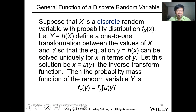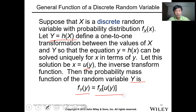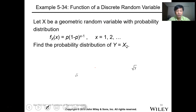General function of a discrete random variable: suppose that x is a discrete random variable with probability distribution f(x). Let y equals h(x) define a one-to-one transformation between the values of x and y, such that the equation y equals h(x) can be solved uniquely for x in terms of y. Let this solution be x equals u(y) — the inverse transform function. Then the probability mass function of the random variable y is f_Y(y) equals f_X(u(y)).